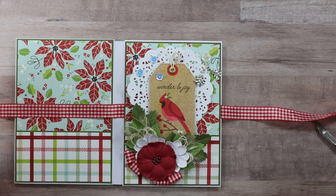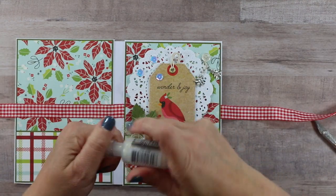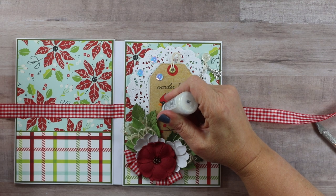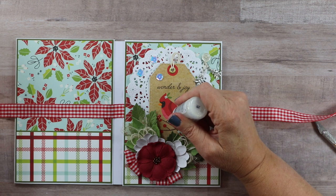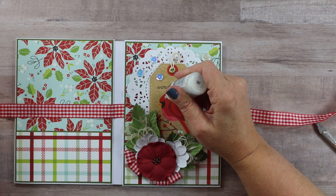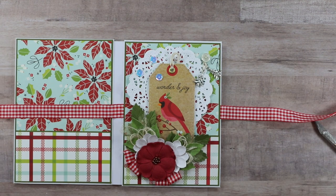Now, last but not least, there is some details that I want to bring out with a little bit of Stickles. So I'm just going to add a little bit here to these berries and also on the top where the cardinal has a little flower and some leaves. And that is going to be it for our folio today.